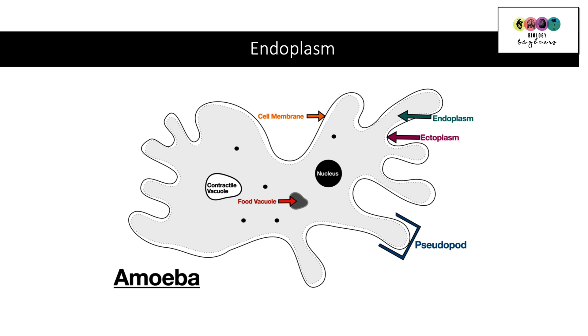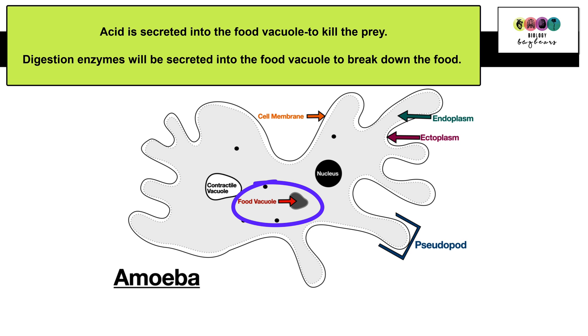Once food is taken in by the amoeba, a food vacuole forms around it. Into this food vacuole, acid is secreted to kill the prey, followed by digestive enzymes to break down the food.